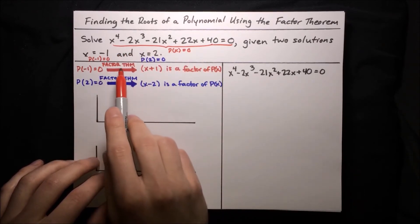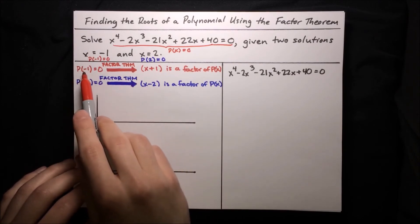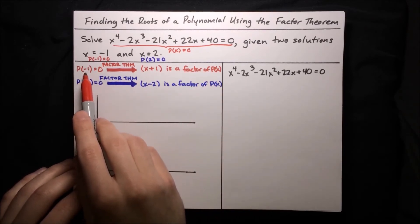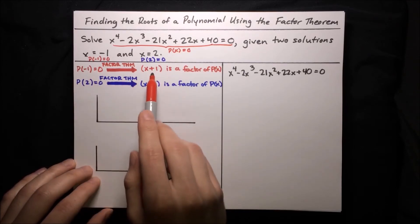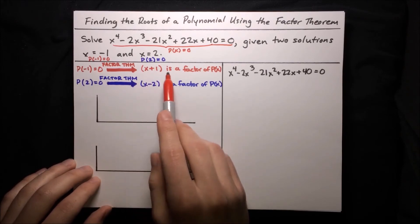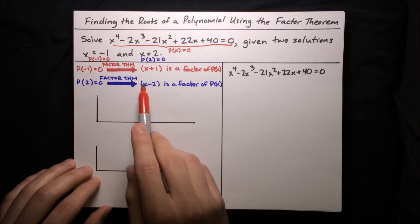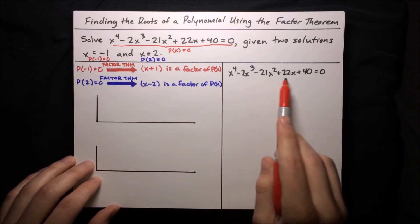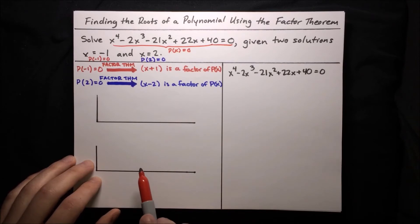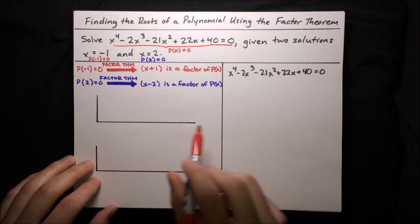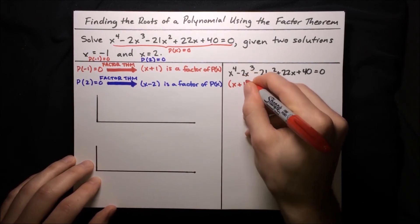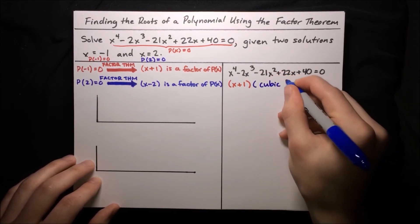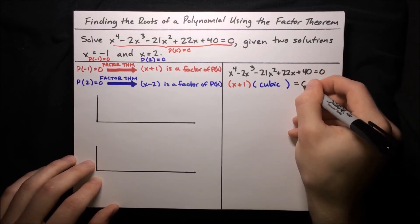We want to factor this fourth-degree polynomial, and we have two factors according to the factor theorem. Since p of negative 1 equals 0, x plus 1 is a factor — remember, you flip the sign on the root to get the factor, so negative 1 becomes x plus 1. And since p of 2 equals 0, x minus 2 is a factor. Let's use these two factors with synthetic division to break down this polynomial. We'll focus on x plus 1 first, so we'll have x plus 1 times a cubic equal to 0.